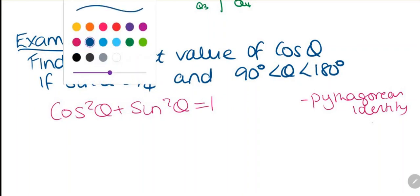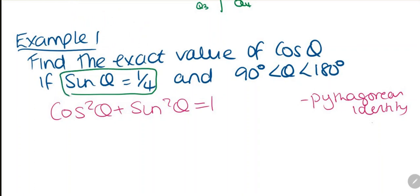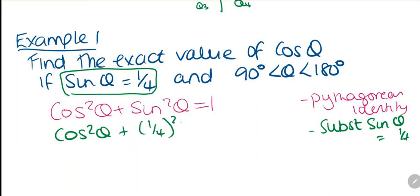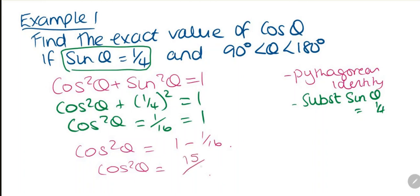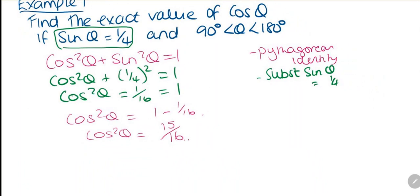We're going to substitute in the value from the question. Sine theta equals one quarter, so we substitute to get cosine squared theta plus one quarter squared equals 1. That gives us cosine squared theta plus 1 over 16 equals 1. Now I'm going to subtract 1 over 16 from both sides, which leaves me with cosine squared theta equals 1 minus 1 over 16, which is 15 over 16.